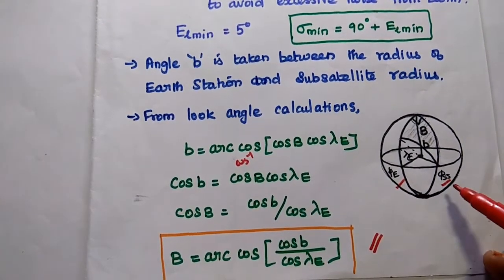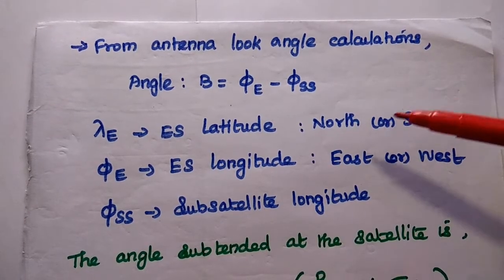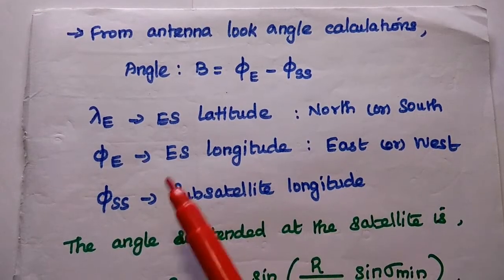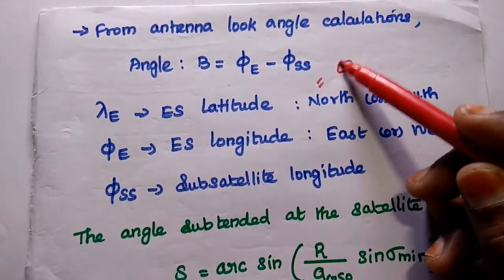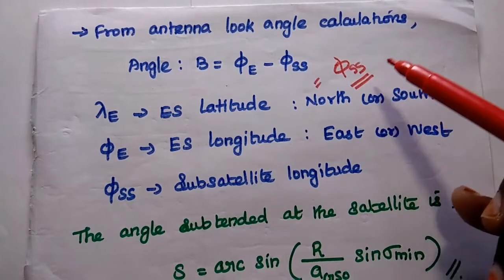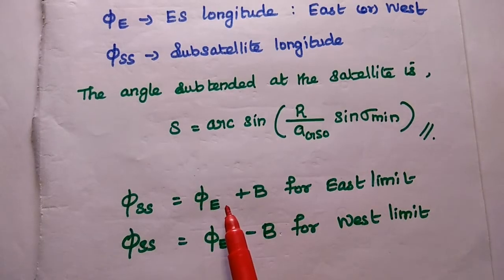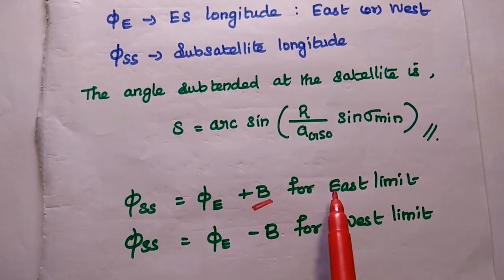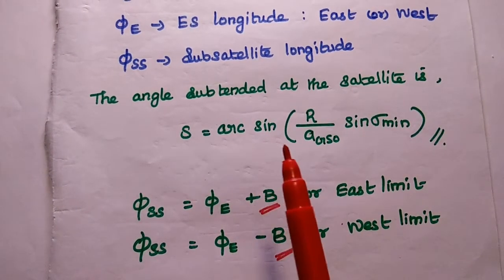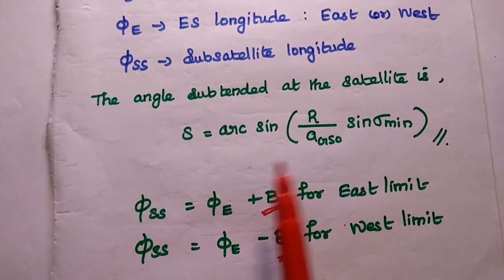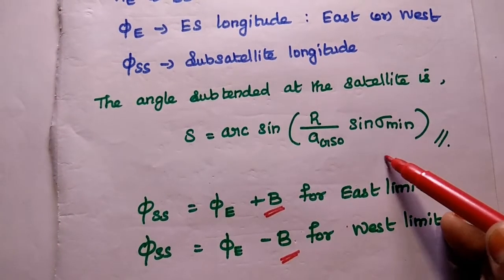From antenna look angle calculations, the angle B is equal to phi_E minus phi_SS, where lambda_E is the earth station latitude, phi_E is the earth station longitude, and phi_SS is the subsatellite longitude. From this expression we get phi_SS = phi_E plus B. If it is positive, we get the limit for the east side; if it is negative, we get the limit for the west side. Finally, the angle subtended at the satellite due to the minimum elevation angle is given as S = arcsin((R / AGSO) · sin(sigma_min)).